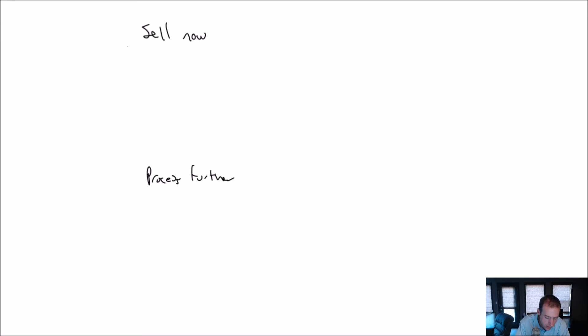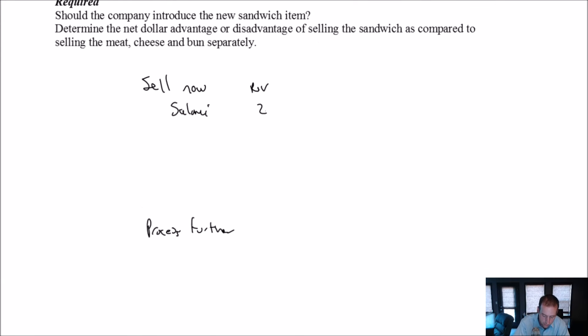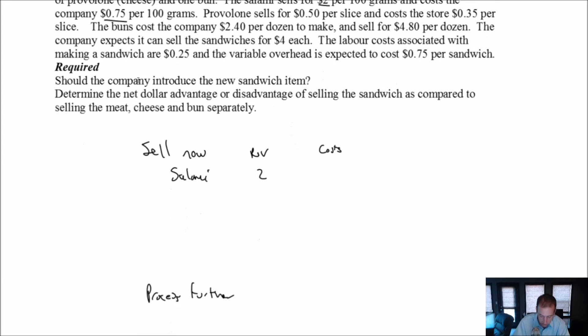So selling now means, and I'm just going to put the ingredients on individually. So I'm going to say, okay, well, we've got salami, and our expected revenue from selling the salami now is $2. It's $2 per 100 gram. Our costs associated with selling the salami is 75 cents per 100 grams. So it's 100 grams of salami that goes in. So our margin when we sell salami is $1.25.